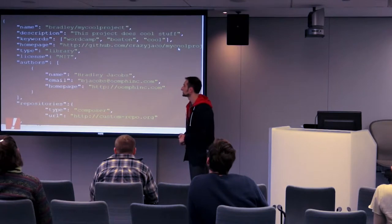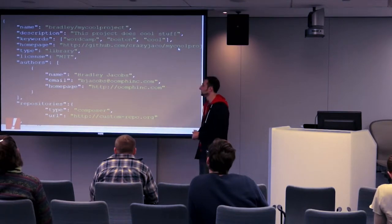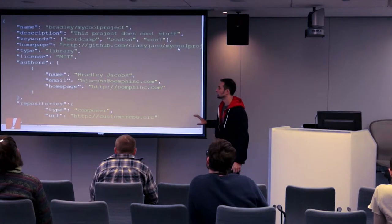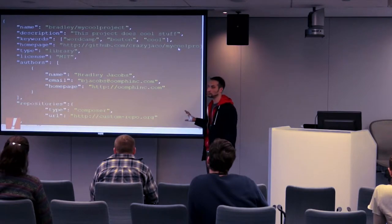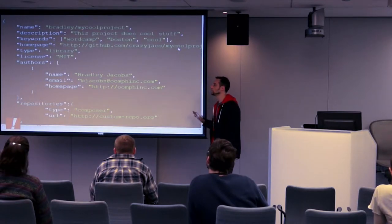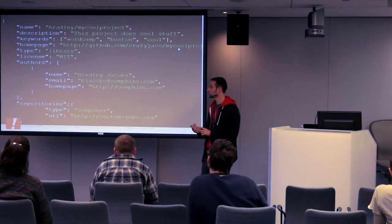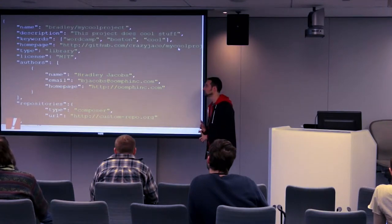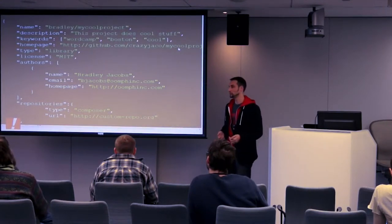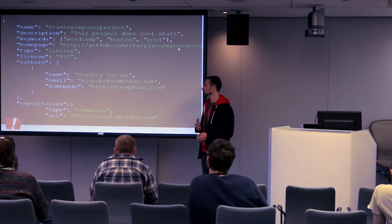This is what a composer.json file looks like. It has generic information at the top: name, description, and keywords — essentially tags for how people search for your project. There's also a homepage field and a type field, which is important. Most of the time your project will be a library, but you can specify other types — in our case, wordpress-plugin or wordpress-theme. License is also listed — MIT, GPL, or even proprietary. Authors is an array, so we can have multiple authors and their associated metadata.